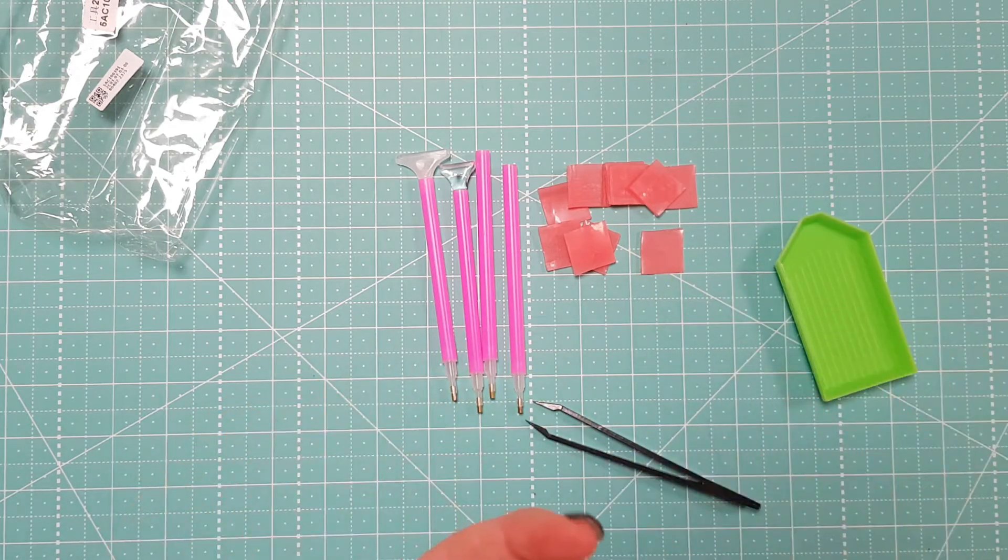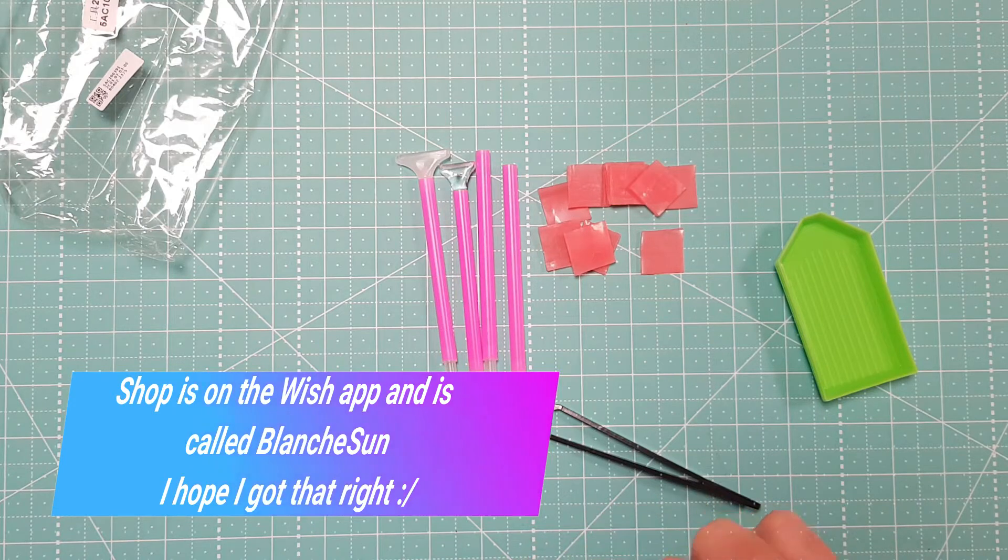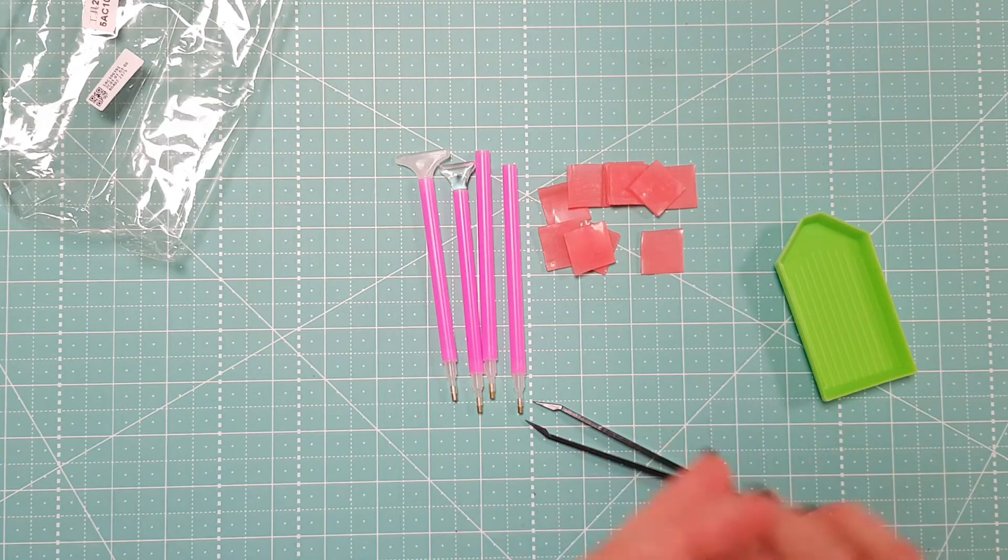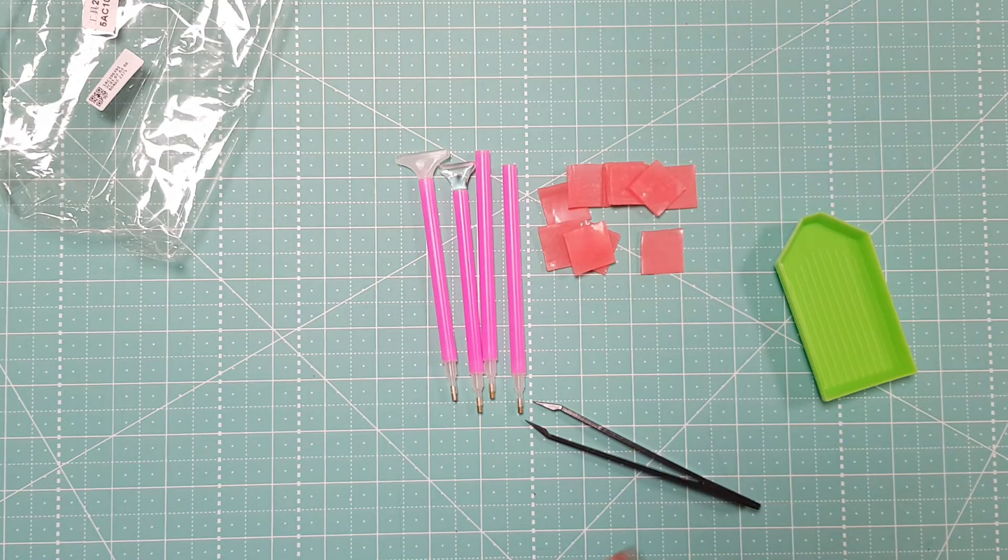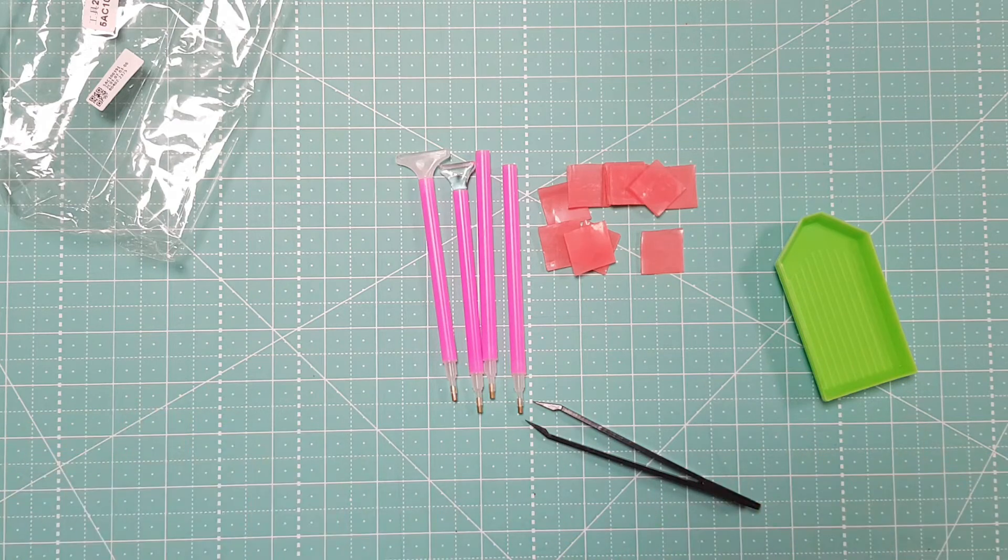The shop that I got it from off Wish was called Blanche Sun, so that's B-L-A-N-C-H-E-S-U-N. As I said it was five dollars, it took five weeks to get to me here in Australia, but in saying that I do live in a rural area and sometimes things can take a little bit longer.